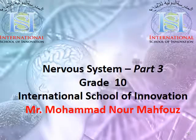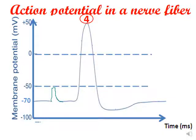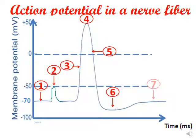Hello grade 10 students. In this video we're going to talk about the nervous system part 3. This graph represents the membrane potential or action potential in a nerve fiber, with different phases: 1, 2, 3, 4, 5, 6, and 7 — these are the different phases of an action potential.